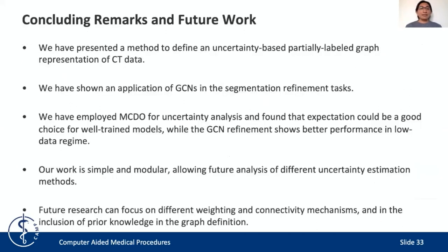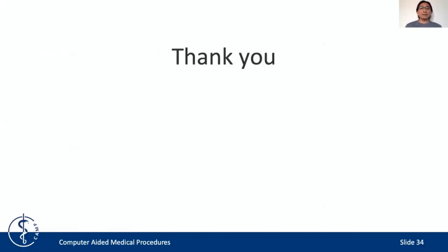As concluding remarks, we have shown a method to define an uncertainty-based partial label graph representation of CT data, and an application of GCNs in the segmentation refinement task for organ segmentation. We employed Monte Carlo Dropout for uncertainty analysis and found that the expectation could be a good choice for well-trained models. However, the GCN refinement strategy shows better performance in low data regimes. Our work is simple and modular, allowing future analysis of different uncertainty estimation methods, different weighting and connectivity strategies, and the inclusion of prior knowledge in the graph construction. Thank you for your attention.